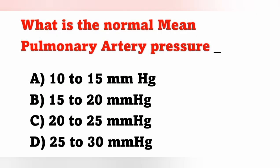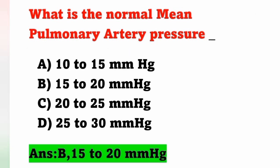What is the normal mean pulmonary artery pressure? Option A: 10–15 mmHg, option B: 15–20 mmHg, option C: 20–25 mmHg, option D: 25–30 mmHg. The normal mean pulmonary artery pressure is 15–20 mmHg. Option B is the correct answer.